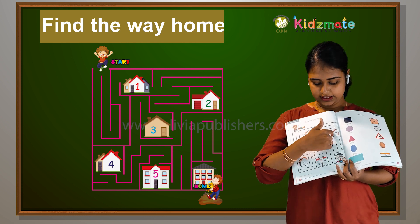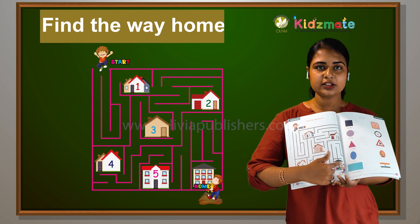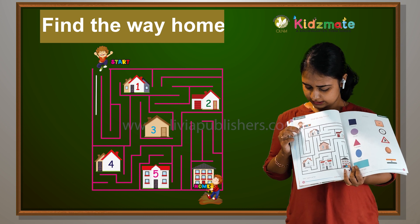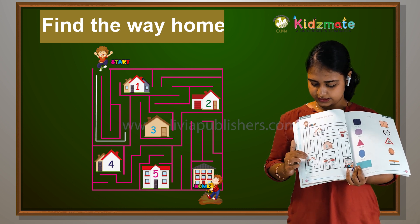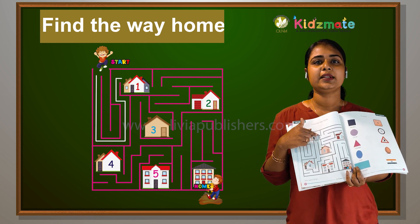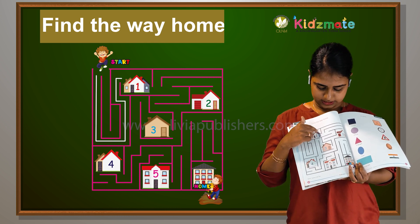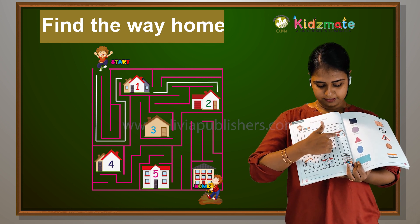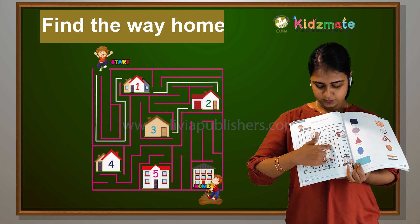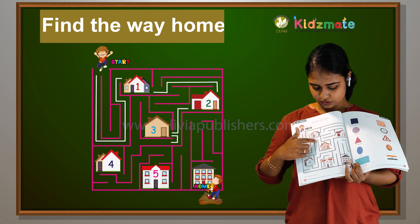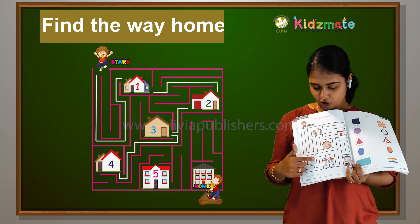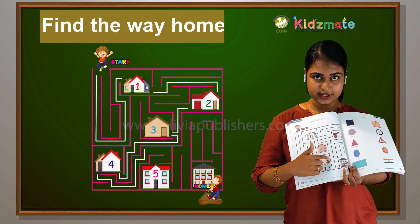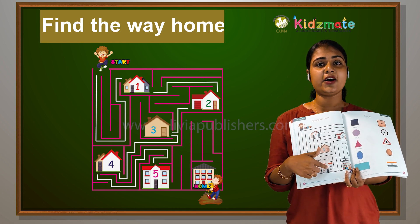Let's go to the next page. Check out your pencil and start moving. Here you reach home number one. Here you come to home number two. Here is home number three. You should reach home number four. From 4, you should move like this and reach home number 5.